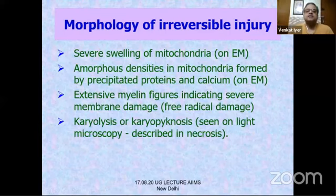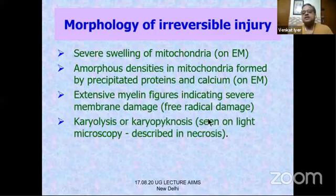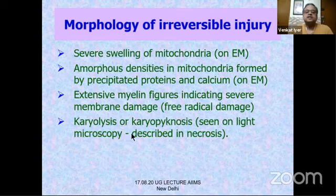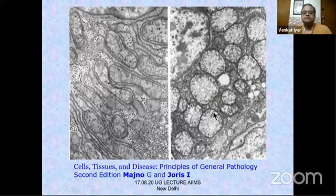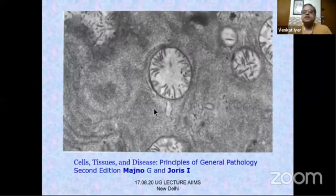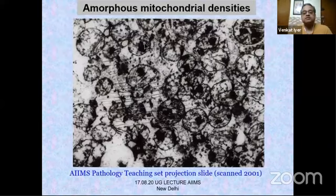On EM in irreversible injury: severe swelling of mitochondria is seen. Amorphous densities in mitochondria are formed from precipitated proteins and calcium. Extensive myelin figures indicate free radical damage. Karyolysis and karyopyknosis are seen on light microscopy. The cristae are no longer properly visible. Amorphous densities in mitochondria are visible on EM.